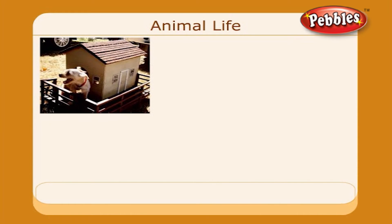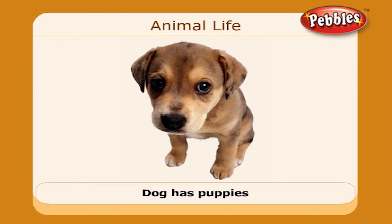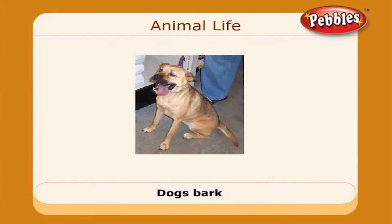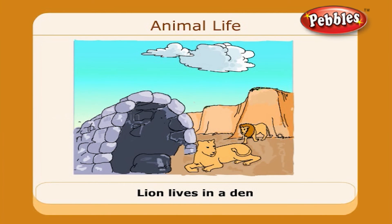We shall now see the homes, young ones, and the sounds of animals. A baby dog is called a puppy. Kennel is its house, and dogs bark. A lion has cubs; it lives in a den, and the lion roars.